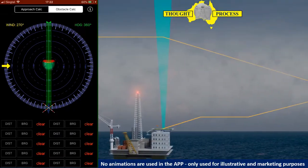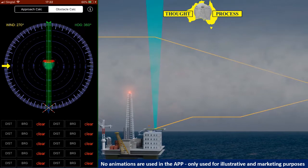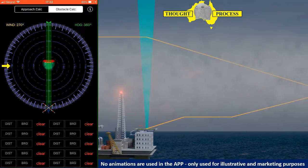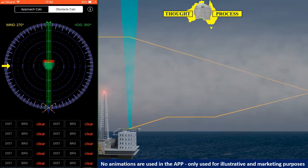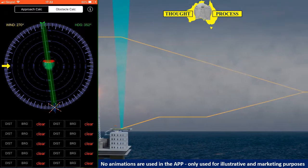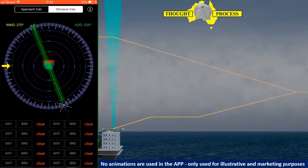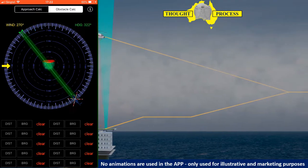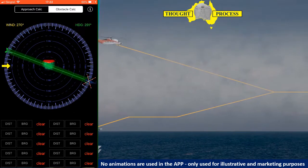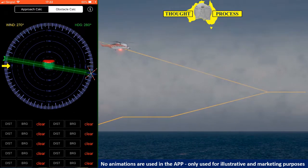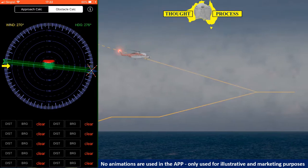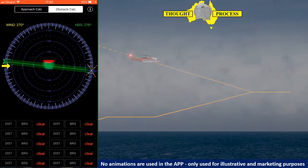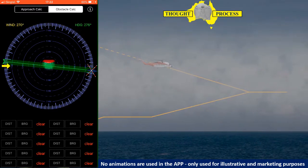This screen has a heading bug feature that is linked to the helicopter. Also, a green transparent sector that extends 1 nautical mile on each side of the final approach track is added to this feature and will be explained in more detail.